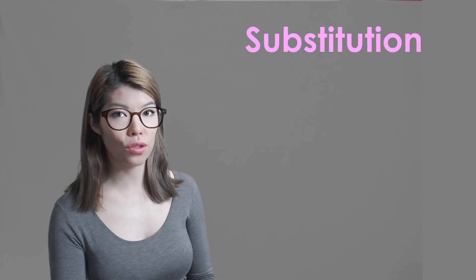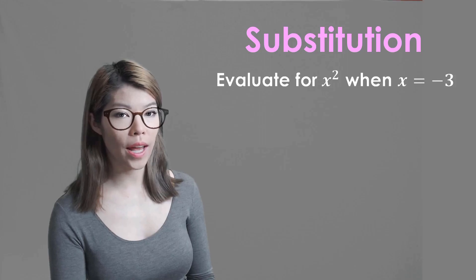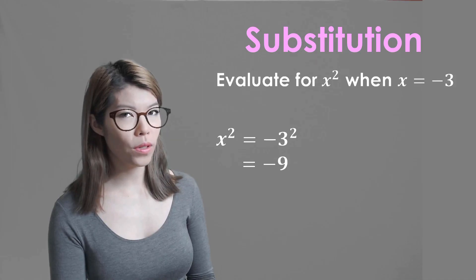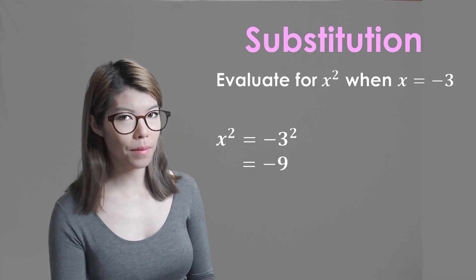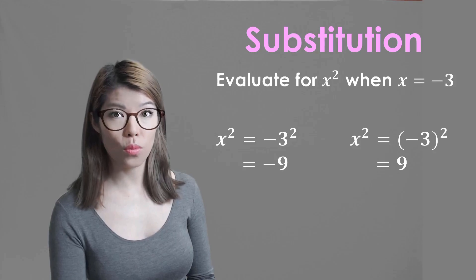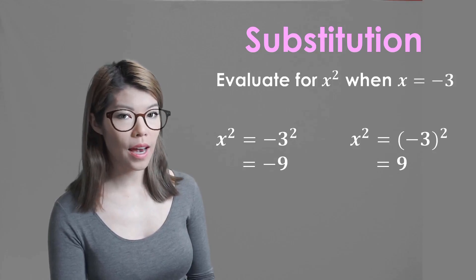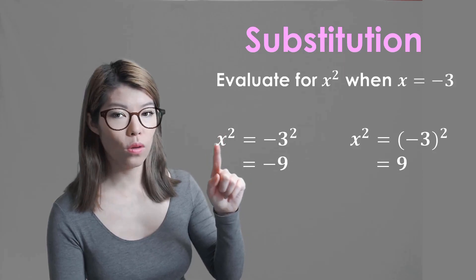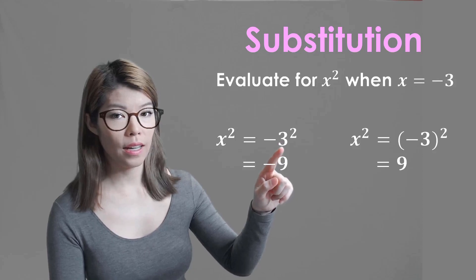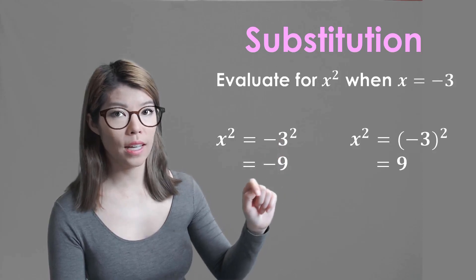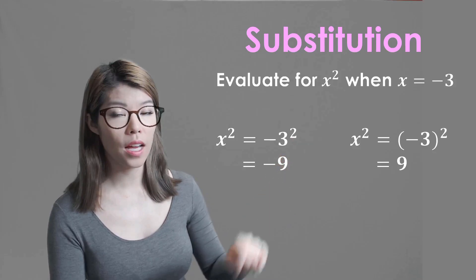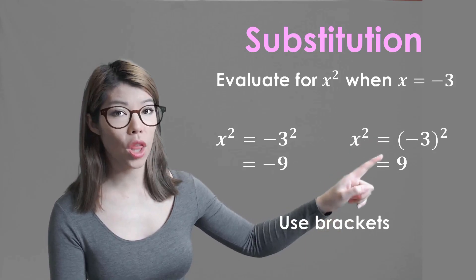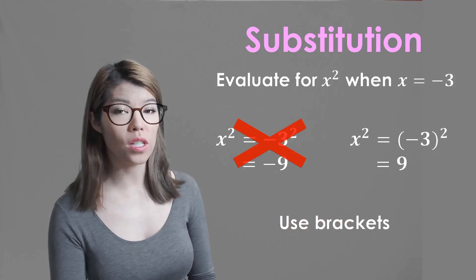Let's practice substitution. Evaluate for x squared when x equals minus 3. Well it looks almost correct here but there's something not quite right. We should really use brackets because when we have x squared we're substituting the x with the minus 3. So the whole of x is squared, not just the 3. If we didn't use brackets and we accidentally went 3 squared is 9 so it's minus 9, we would be incorrect. We should use brackets and it should be minus 3 times minus 3 which is positive 9.